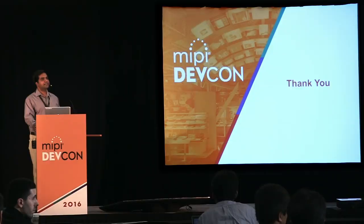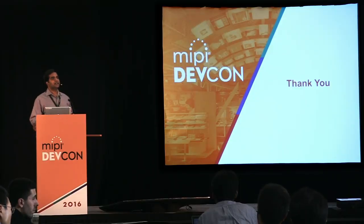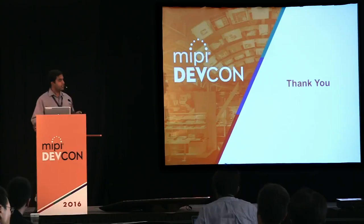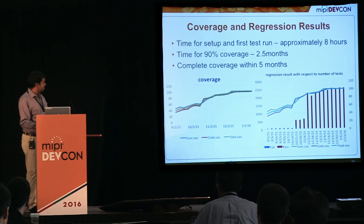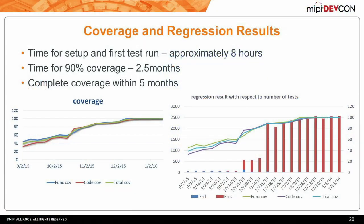Q: The 100% coverage number—was that code coverage or functional coverage? A: It was actually both. If you see this graph, this is the functional coverage and this is the code coverage. They basically mix those and make it a total coverage number.